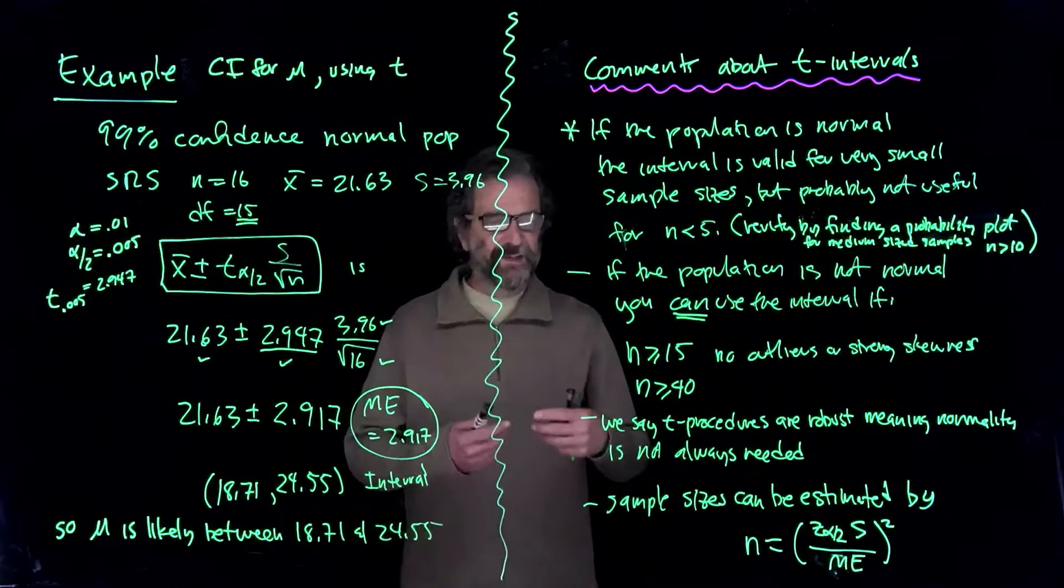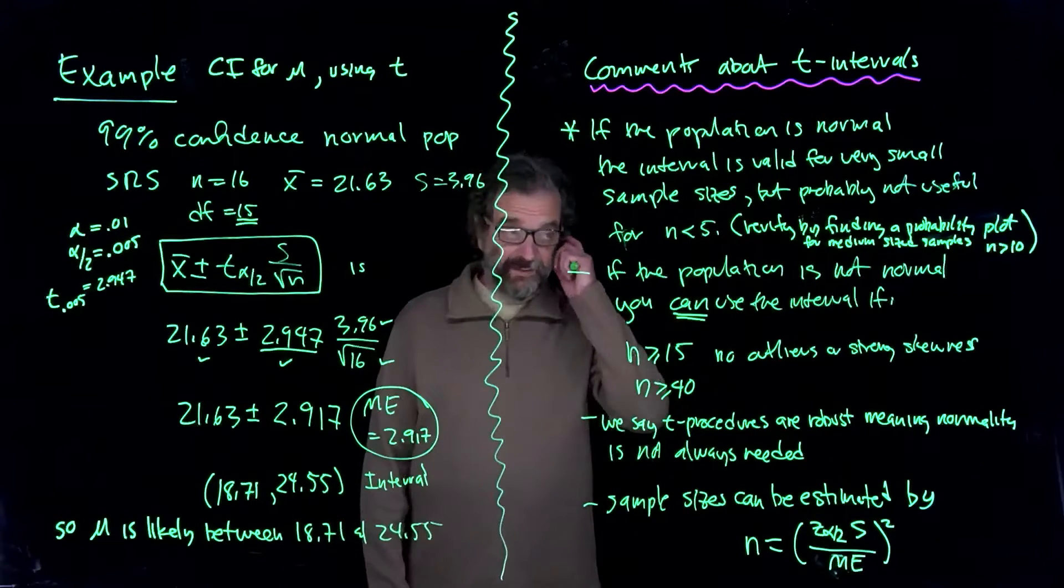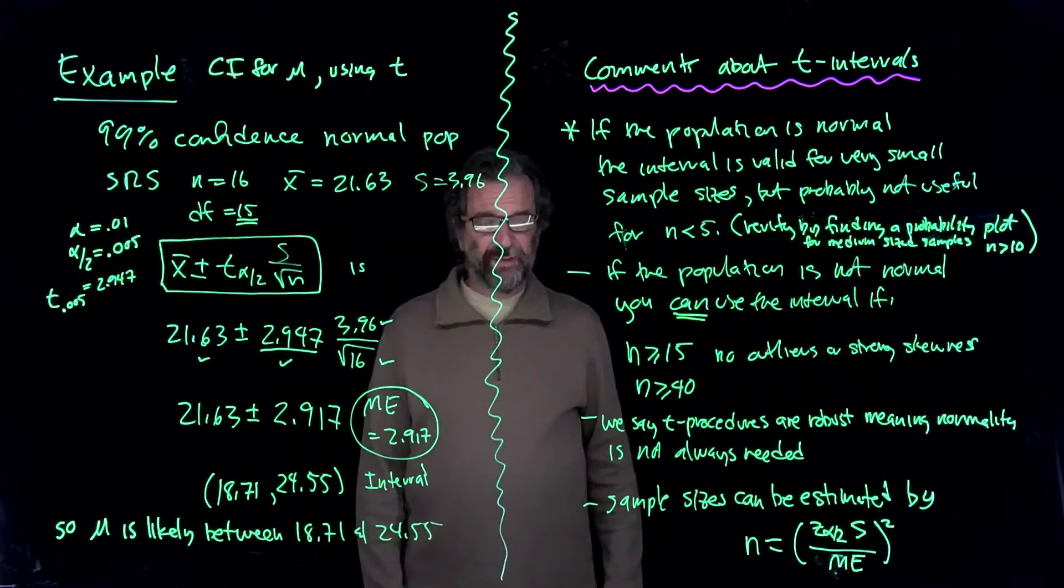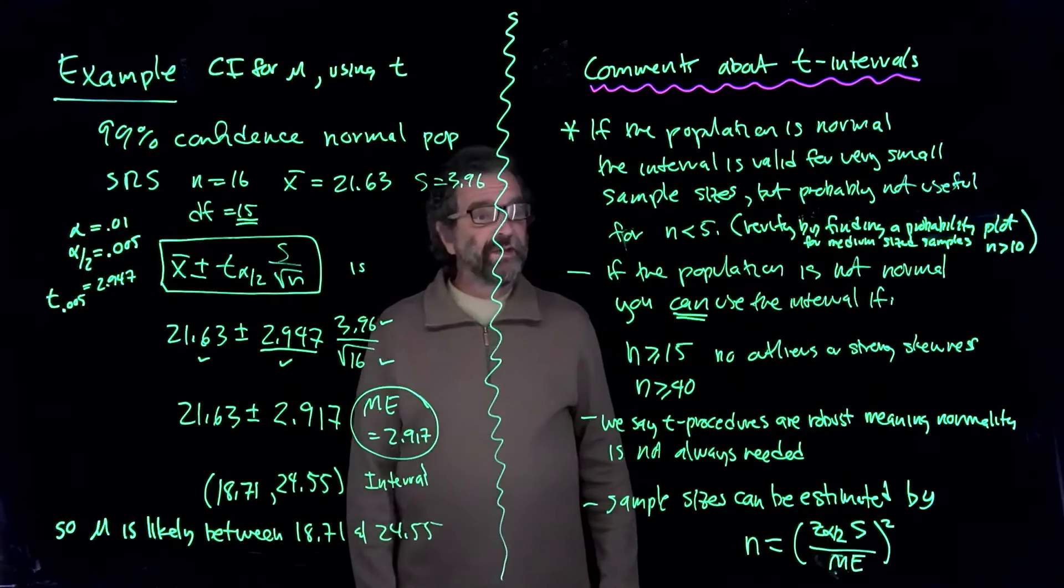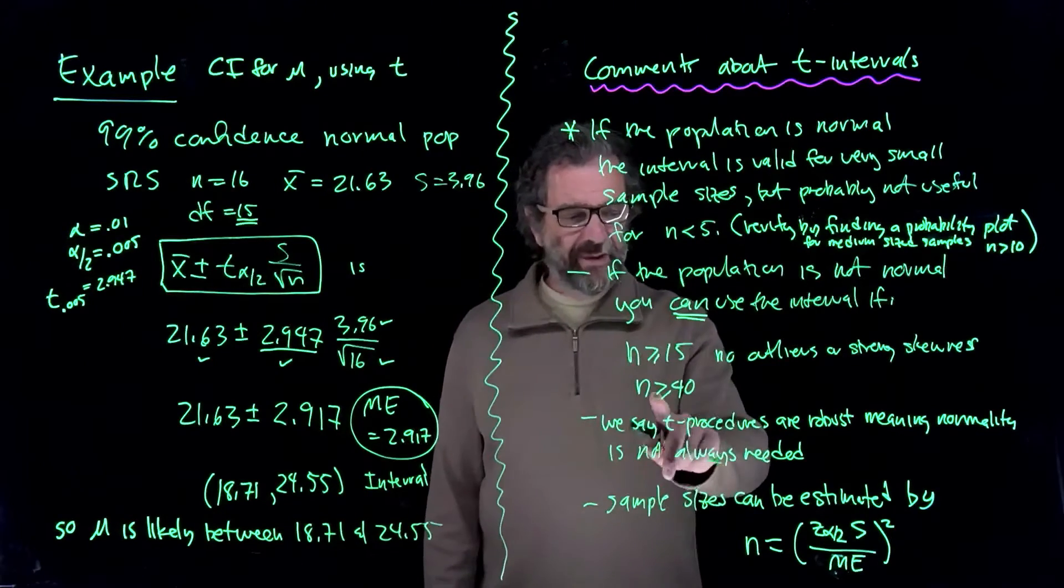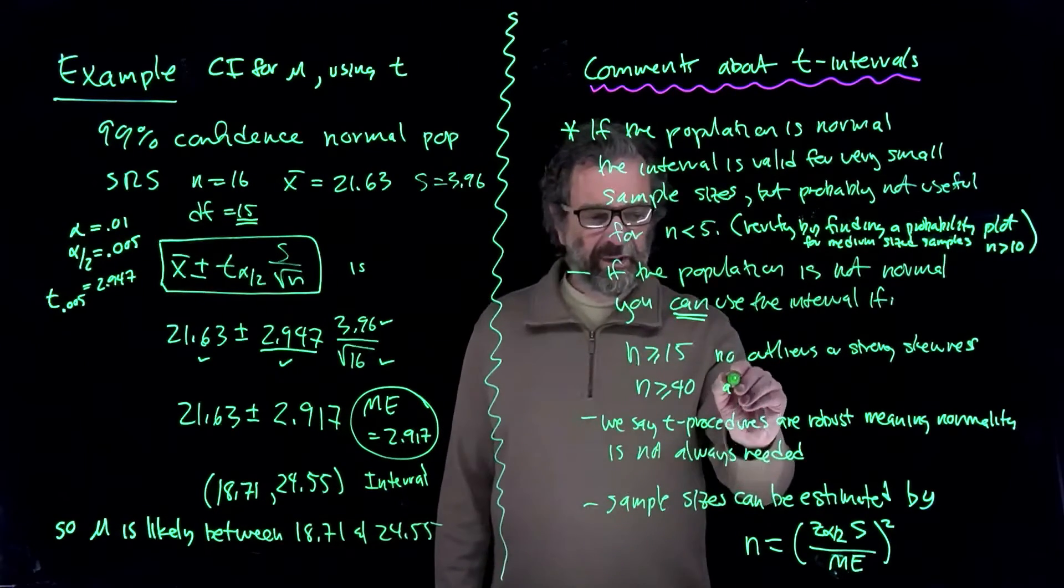So anything that's basically a lump of data doesn't have outliers, doesn't seem to have strong skewness. Any shaped lump you can think of. And if n is at least 40, almost always.